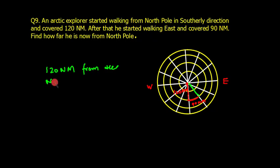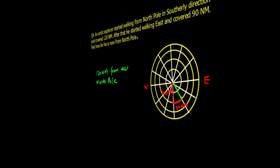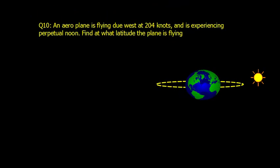Now let's move on to another problem. Here, an aeroplane is flying due west at 204 knots and is experiencing perpetual noon. Find at what latitude the plane is flying.